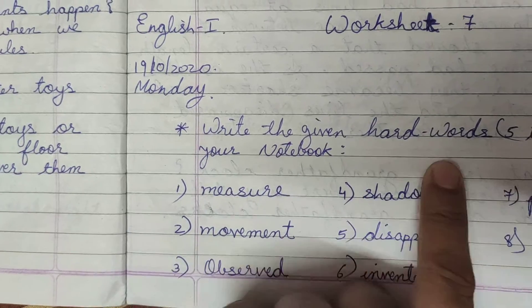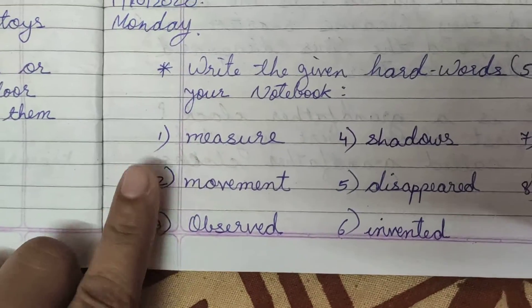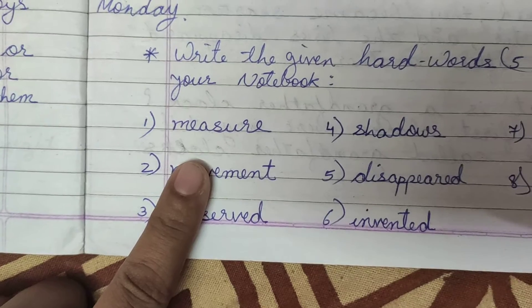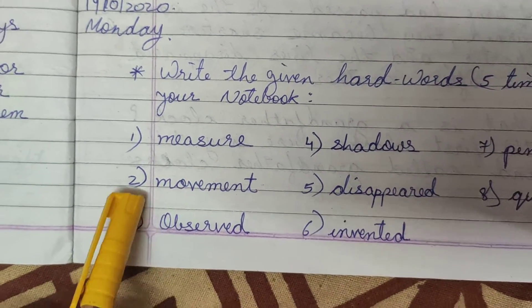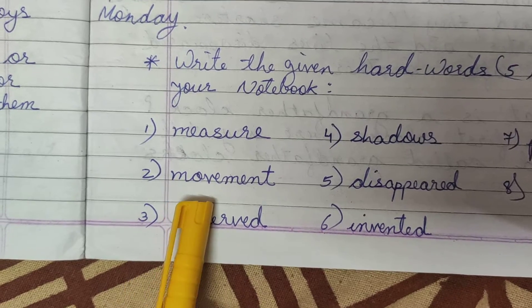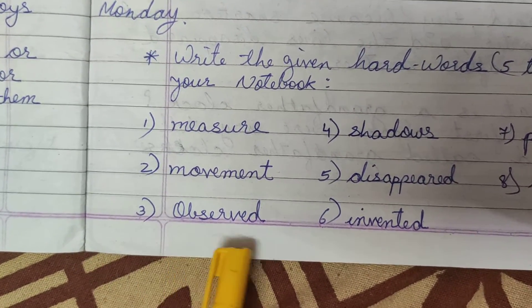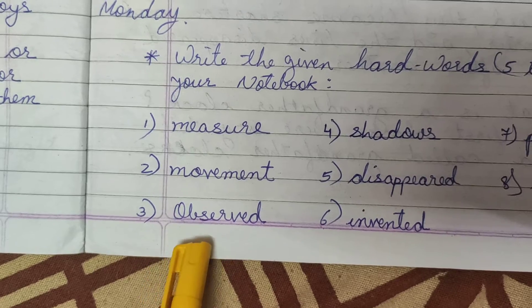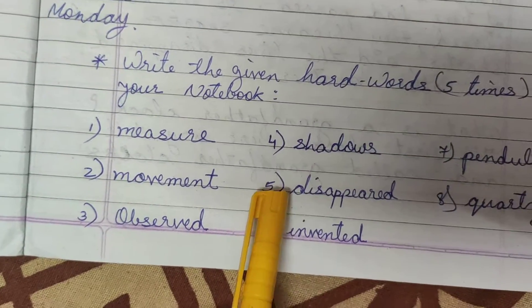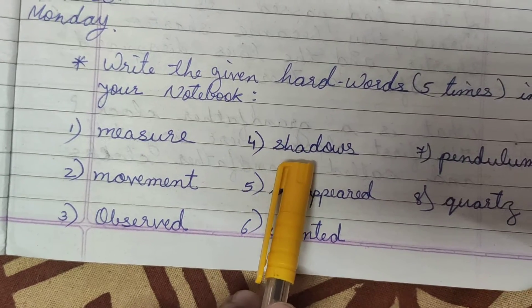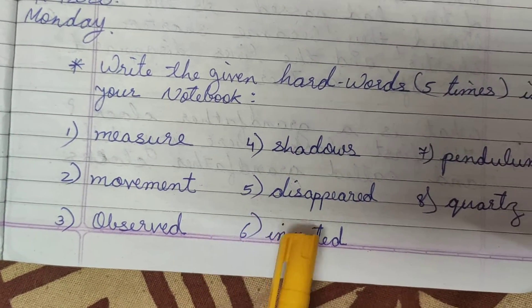Write the given hard words 5 times in your notebook. Number 1: measure — m-e-a-s-u-r-e, measure. Number 2: movement — m-o-v-e-m-e-n-t, movement. Number 3: observed — o-b-s-e-r-v-e-d, observed. Number 4: shadows — s-h-a-d-o-w-s, shadows.